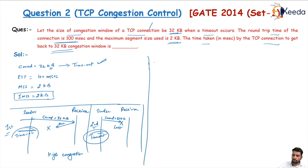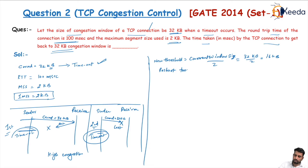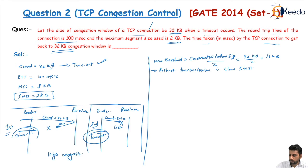We need to set a new threshold value. The new threshold is equal to the current window size divided by 2. The current window size is 32 kilobytes, so the new threshold is 16 kilobytes. Then we restart transmission in the slow start phase.